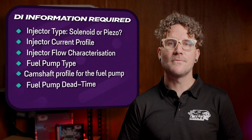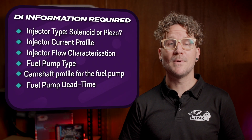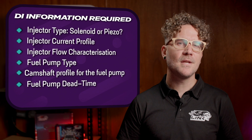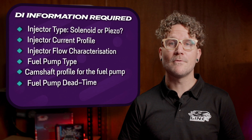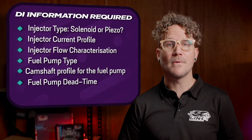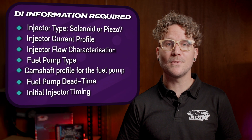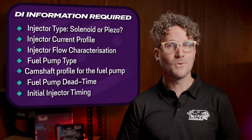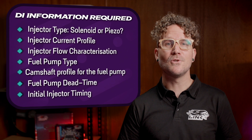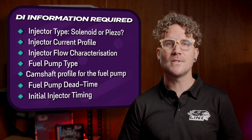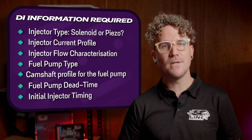Measuring a direct injection fuel pump dead time is a complex task. The easiest way to get this information is from the factory ECU. If that is not possible, you'll need to find a way to reverse engineer it from the fuel pump. If you can get this information from your car's factory ECU, it will streamline your tuning time, though you can work this out on the fly as you tune.